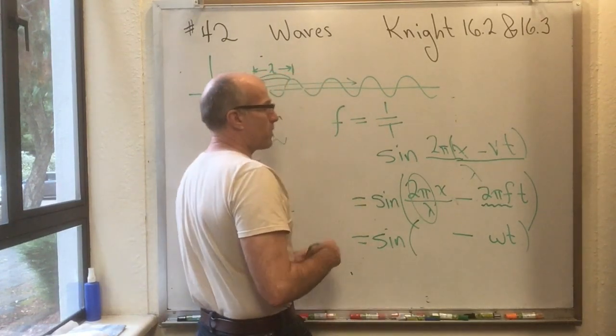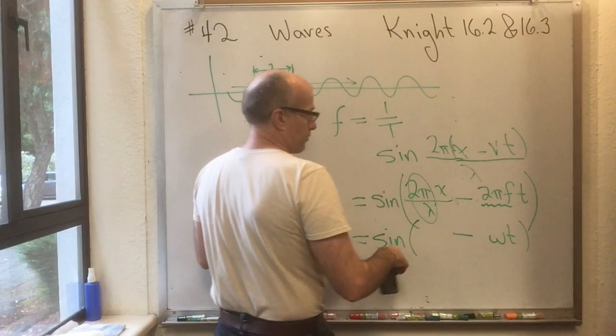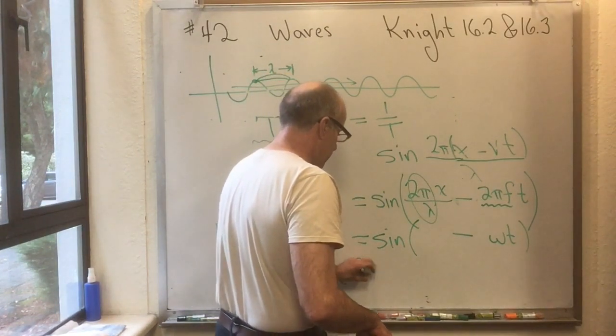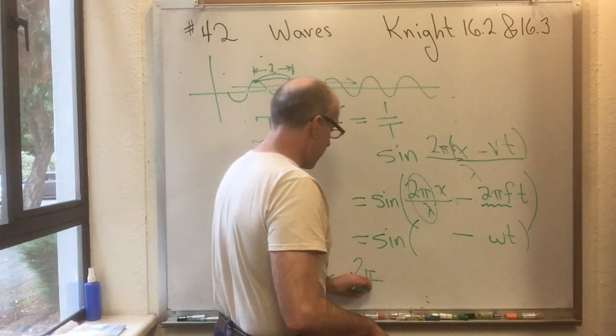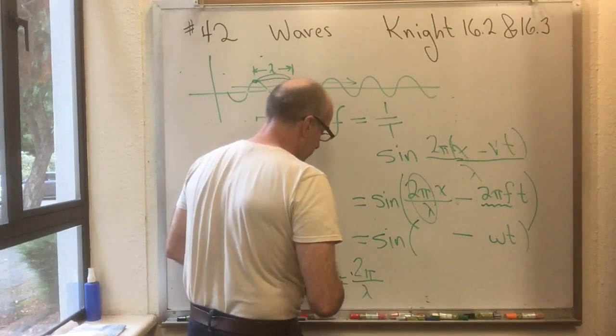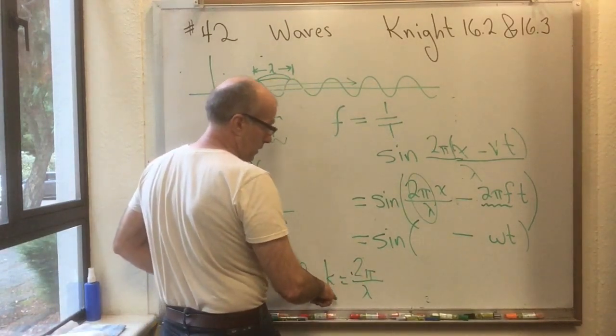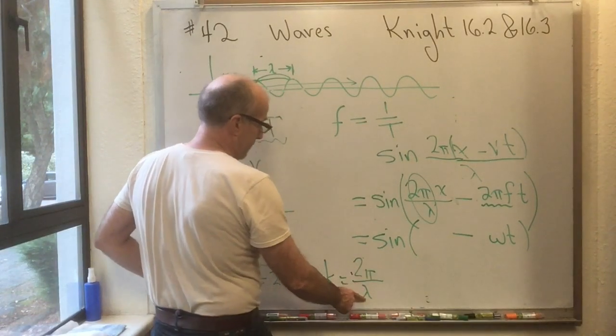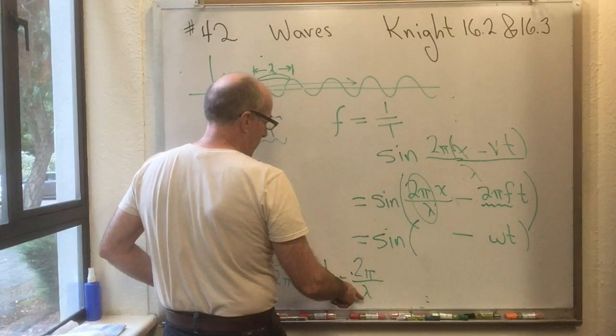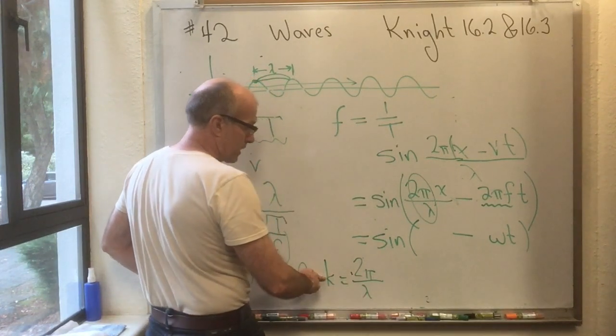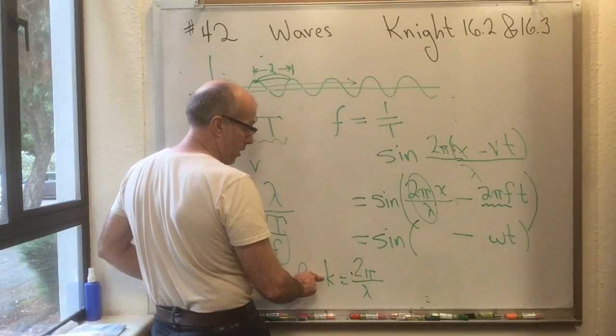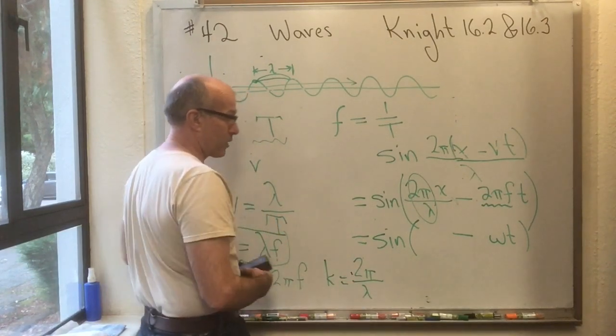And K is equal to, this has got nothing to do with Hooke's Law, K is equal to 2 pi over lambda. So this is a new thing, which is 2 pi times 1 over the wavelength. And in other words, if the wavelength is really short, this is a big number. And if the wavelength is really long, this is a small number, because this is proportional to 1 over lambda.